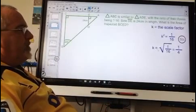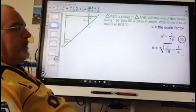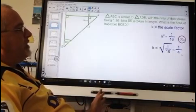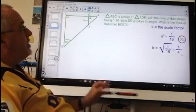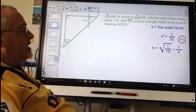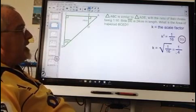We then do the square root of 1 over 16 and we get 1 over 4. And doing this, we are finding the ratio of the distances since what we were given was the ratio of the areas. And it is the ratio of the distances that we are going to need to do the next step.